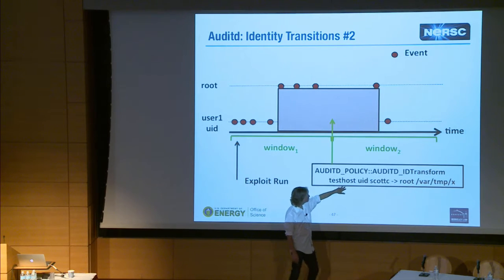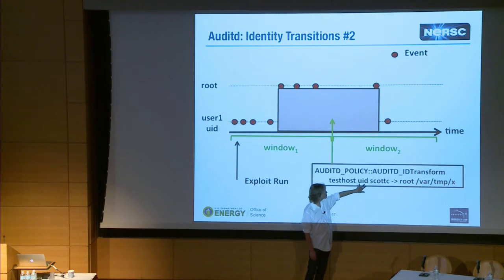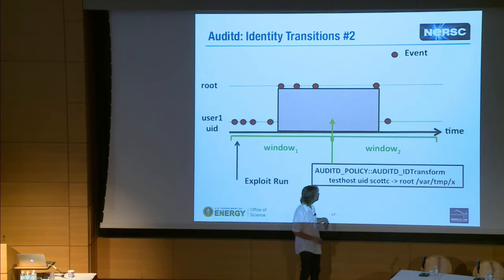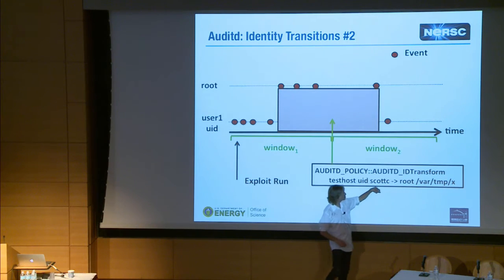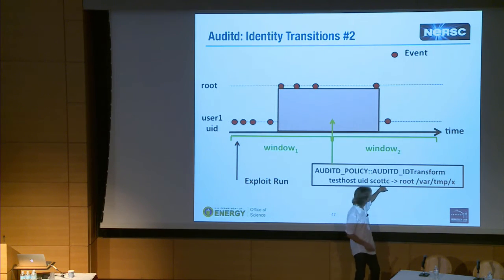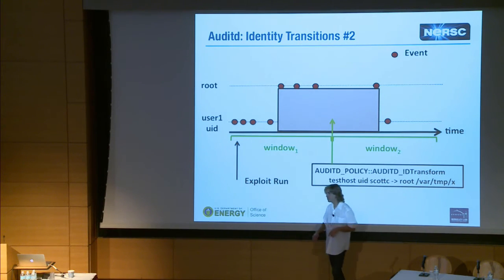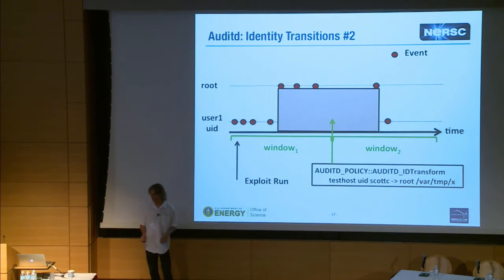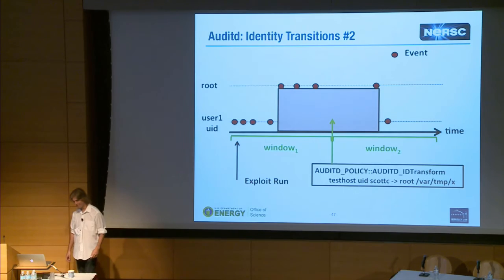If Johnny Hacker executes a local privilege escalation exploit and becomes root for a long time — and long time might just be seconds — I get a notice. Not only do I get a notice: it tells me the host, the identity that changed (the whole 8-tuple), and what got executed. You can take a quick look at the notice and see that '/var/tmp/x' executing is totally not okay.